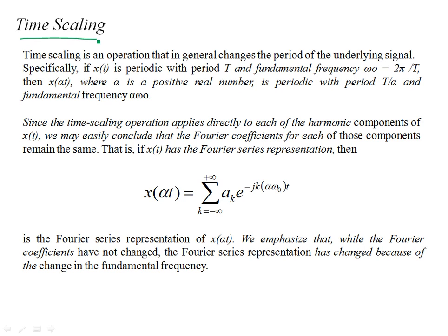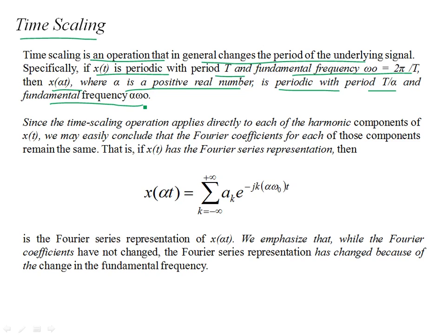The fourth property is time scaling. In general, time scaling changes the period of the underlying signal. Specifically, if x(t) is periodic with period T and fundamental frequency ω₀ = 2π/T, then x(αt) — where α is a positive real number — is periodic with period T/α. The fundamental frequency becomes αω₀, so time scaling increases the frequency by the same multiple.